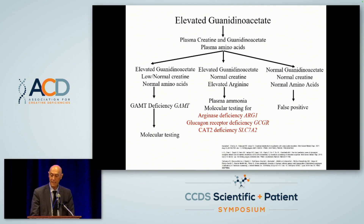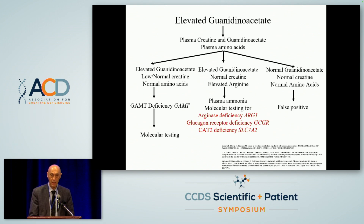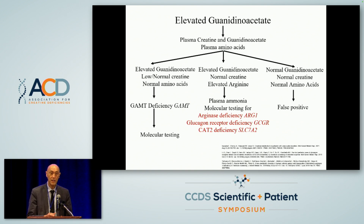The next step is to measure both plasma creatine and guanidino acetate, and plasma amino acids. We want to measure both because there are conditions associated with each that can be identified with each one of these two tests.